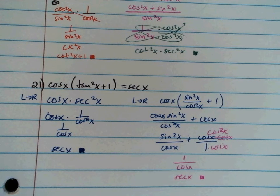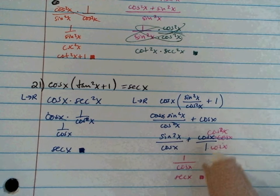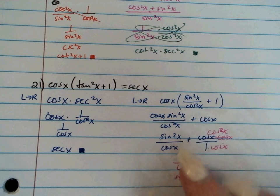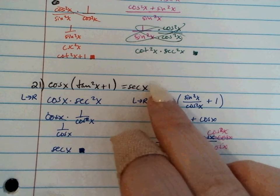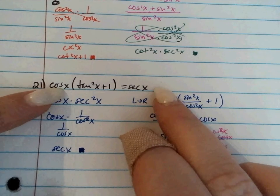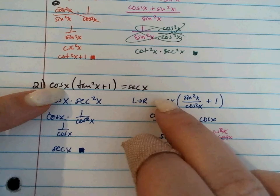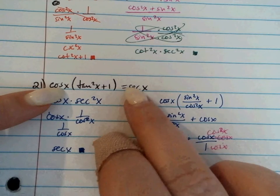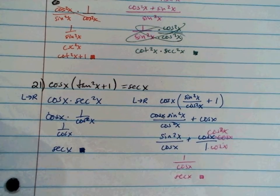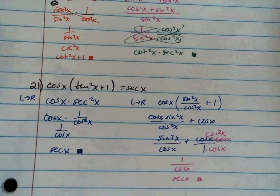In actuality, going right to left would just mean multiplying top and bottom by cosine — just like here, we cancel a cosine. If I multiply secant by cosine on top and bottom, then those two cosine squares in the numerator are the same thing as secant squared, and that's tangent squared plus 1.